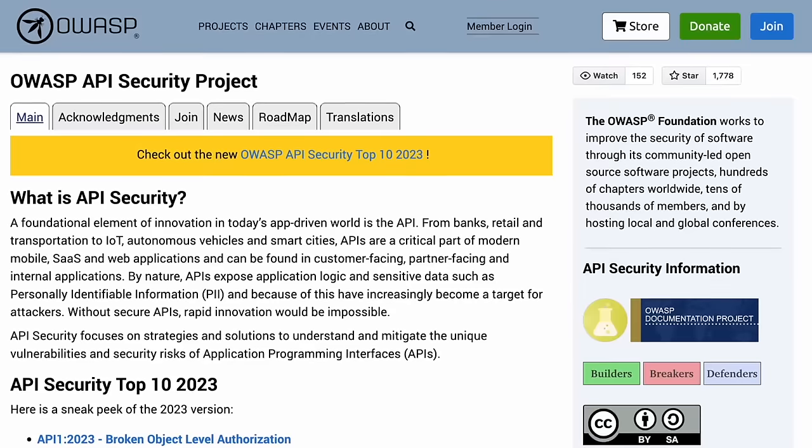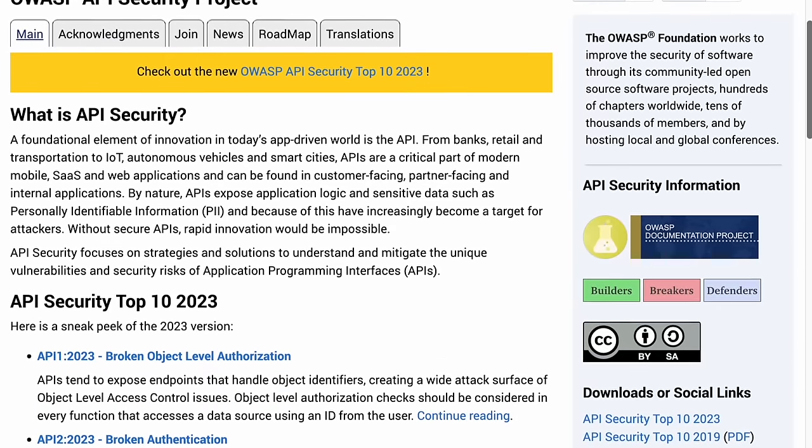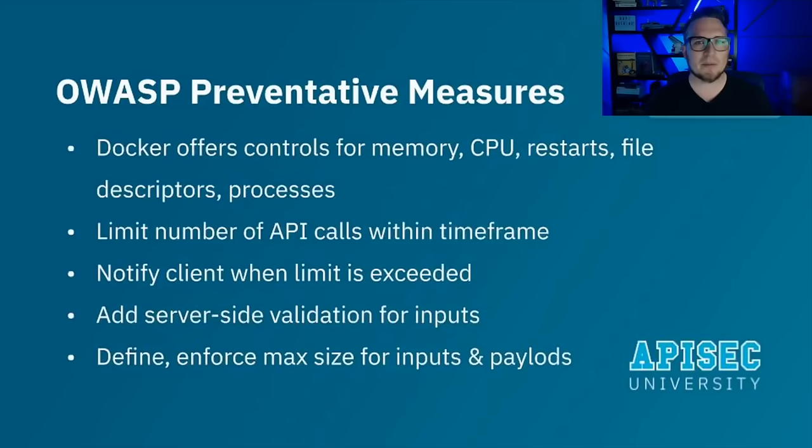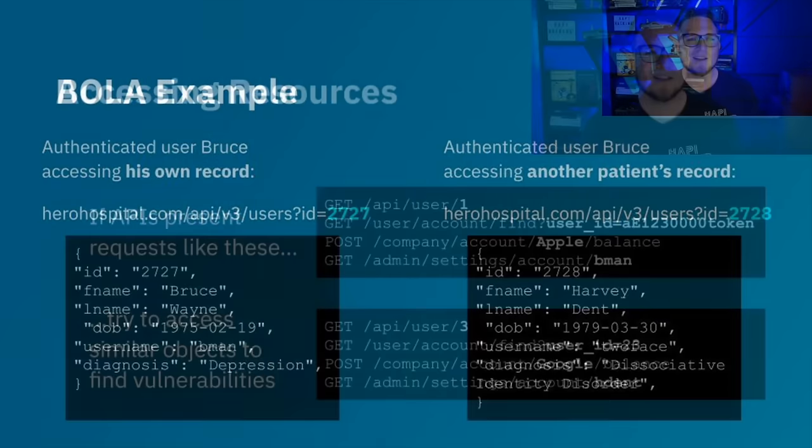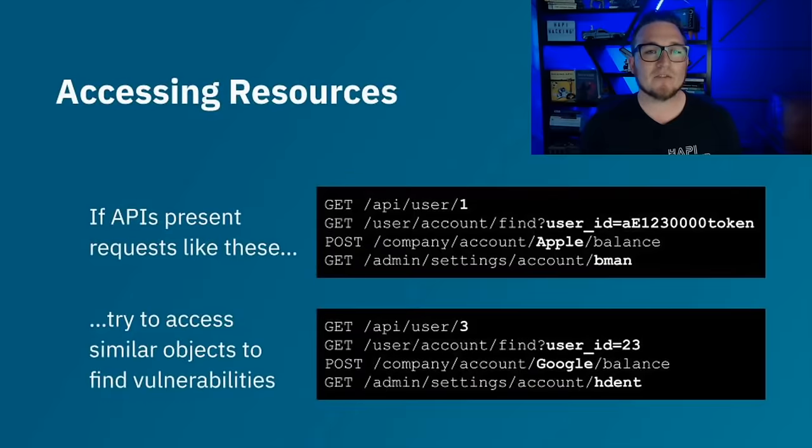The OWASP API Security Top 10 is a standard reference guide highlighting the most critical web API vulnerabilities to help developers and organizations understand and mitigate potential security threats. In this course, you will learn about each security risk and learn techniques to fortify your APIs against potential threats. Corey Ball developed this course. He is a cybersecurity consultant and a leading expert in API security, so he's the perfect person to teach you how to secure your APIs.